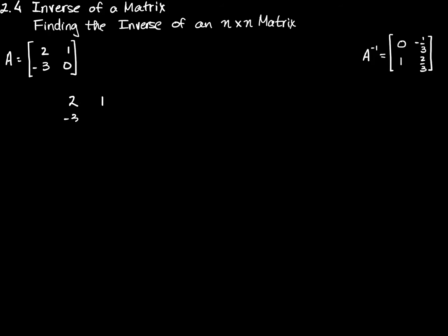So we have matrix A: 2, 1, negative 3, 0. What I'm going to do now is create an augmented matrix, where the other half of my matrix is the identity matrix appropriate to the size of the matrix I'm working with. What I'm going to do next is perform elementary row operations on this matrix so that the left-hand side — the first four entries reflecting matrix A — becomes the identity matrix.